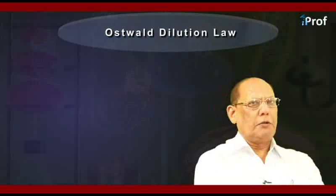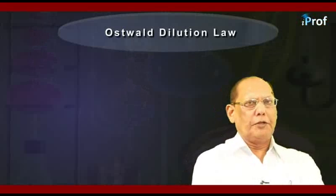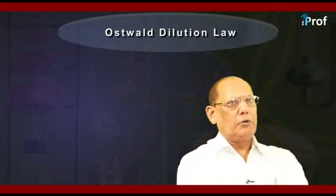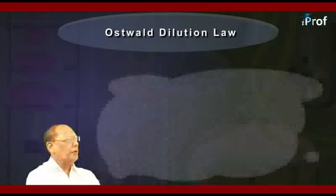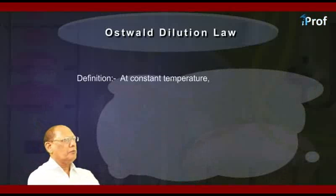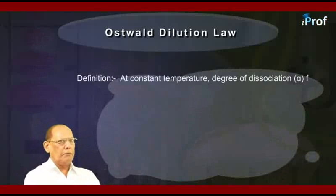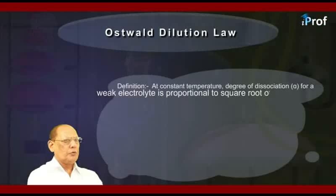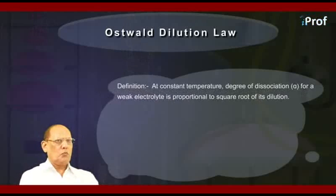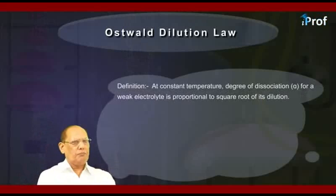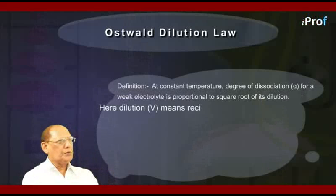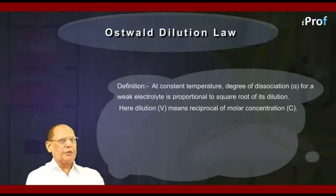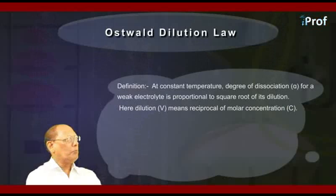Let us see how dilution affects the degree of ionization or degree of dissociation. Oswald gave a law for that, and it is defined as: at constant temperature, degree of dissociation alpha for a weak electrolyte is proportional to the square root of its dilution. Here, dilution V means reciprocal of molar concentration C, so V = 1/C.